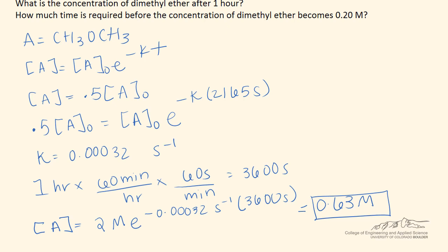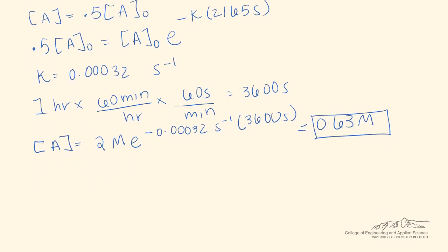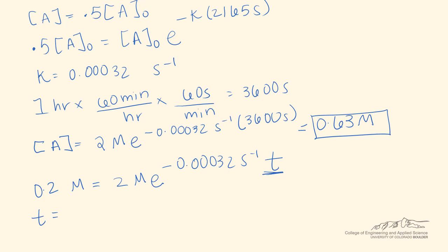Now we can move on to our second problem: how much time is required before the concentration of dimethyl ether becomes 0.2 molar? Now that we've found k and we're given A0, we can treat this as a plug-and-chug problem. Using the first-order process equation, the final concentration is 0.2 molar, the initial concentration is 2 molar, and we solve for t. After simplifying, we find that t equals 7,195.58 seconds, which is also equivalent to 2 hours.